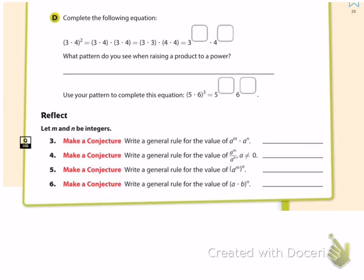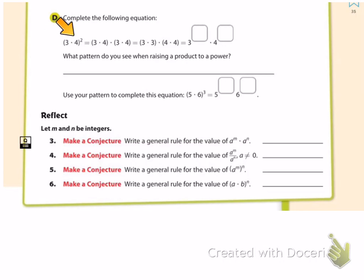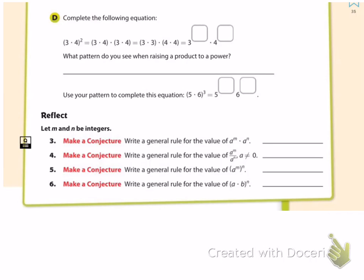We've got one more section: Part D. It's a little different — notice what we have raised to a power. We have a product, three times four, with two factors. The parentheses mean three times four is our base, and that base is being raised to the second power. So we have the quantity three times four, squared. If we write that out, we have three times four times three times four — we use three times four as a factor twice.